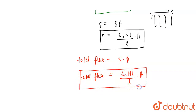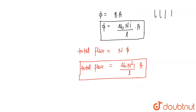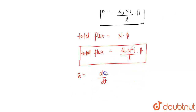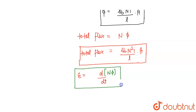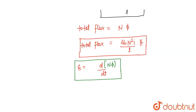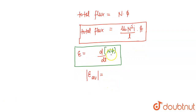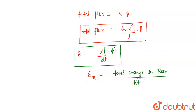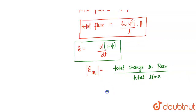When we multiply N into Φ, we get N² in the expression — so the total flux has N² in it. Now to find the average induced EMF, its magnitude is the total change in flux divided by total time: E_avg = ΔΦ_total / Δt.